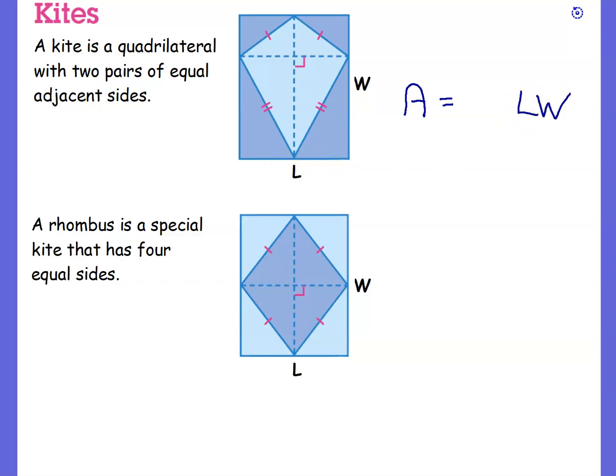It's pretty much, have a look at the big rectangle around the outside. That's just length times width. Now, what fraction of that big square is the kite? Well, that is half of that, so that's half of that, that's half of that, that's half of that.